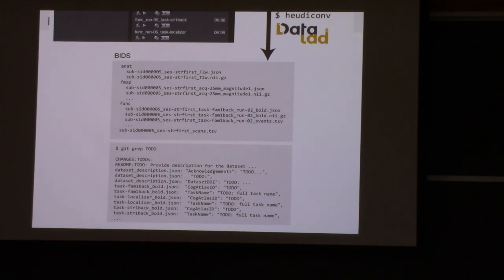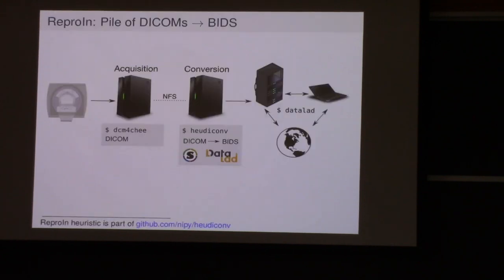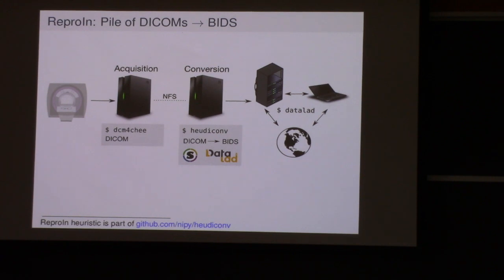Everything is under Git and Git-Annex, so all data is under version control from the beginning. You could use Git commands to find descriptions for your study or who should be acknowledged. Because it's Git, you can keep adding more data and merging new data with your changes while your study is ongoing. The overall setup: we have a scanner, then a PACS server, then a conversion server that prepares DataLad datasets in a Singularity container for consistency across all conversions. We use DataLad to manage datasets and push them for analysis on the cluster.